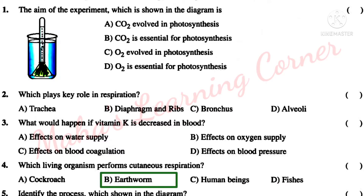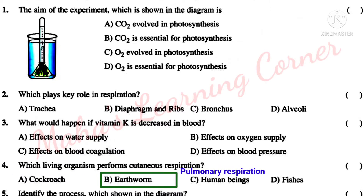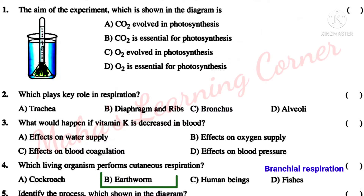Cockroach performs tracheal respiration. Human beings perform pulmonary respiration through lungs. Fishes also perform tracheal respiration. Therefore, the correct answer is Option B — Earthworm.